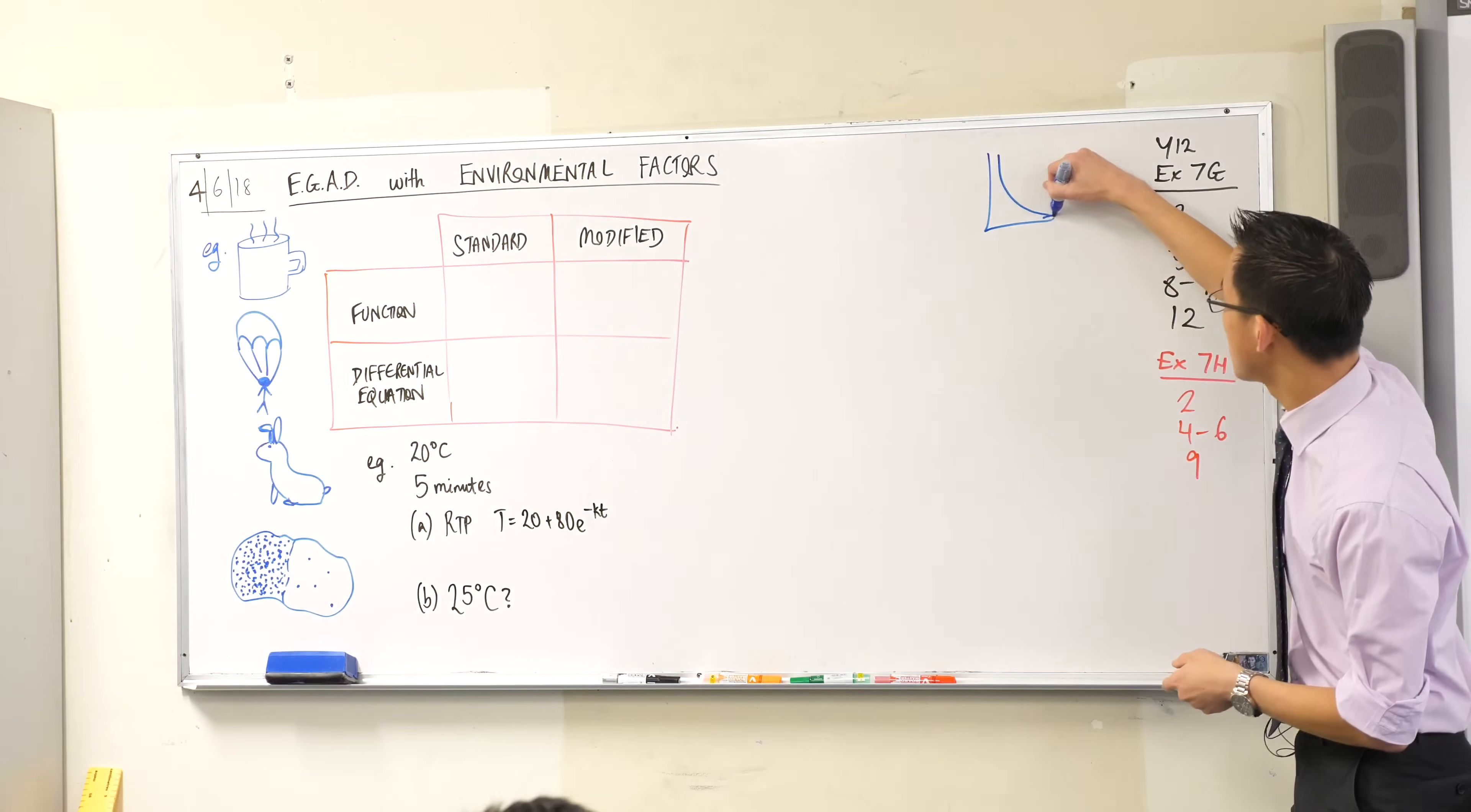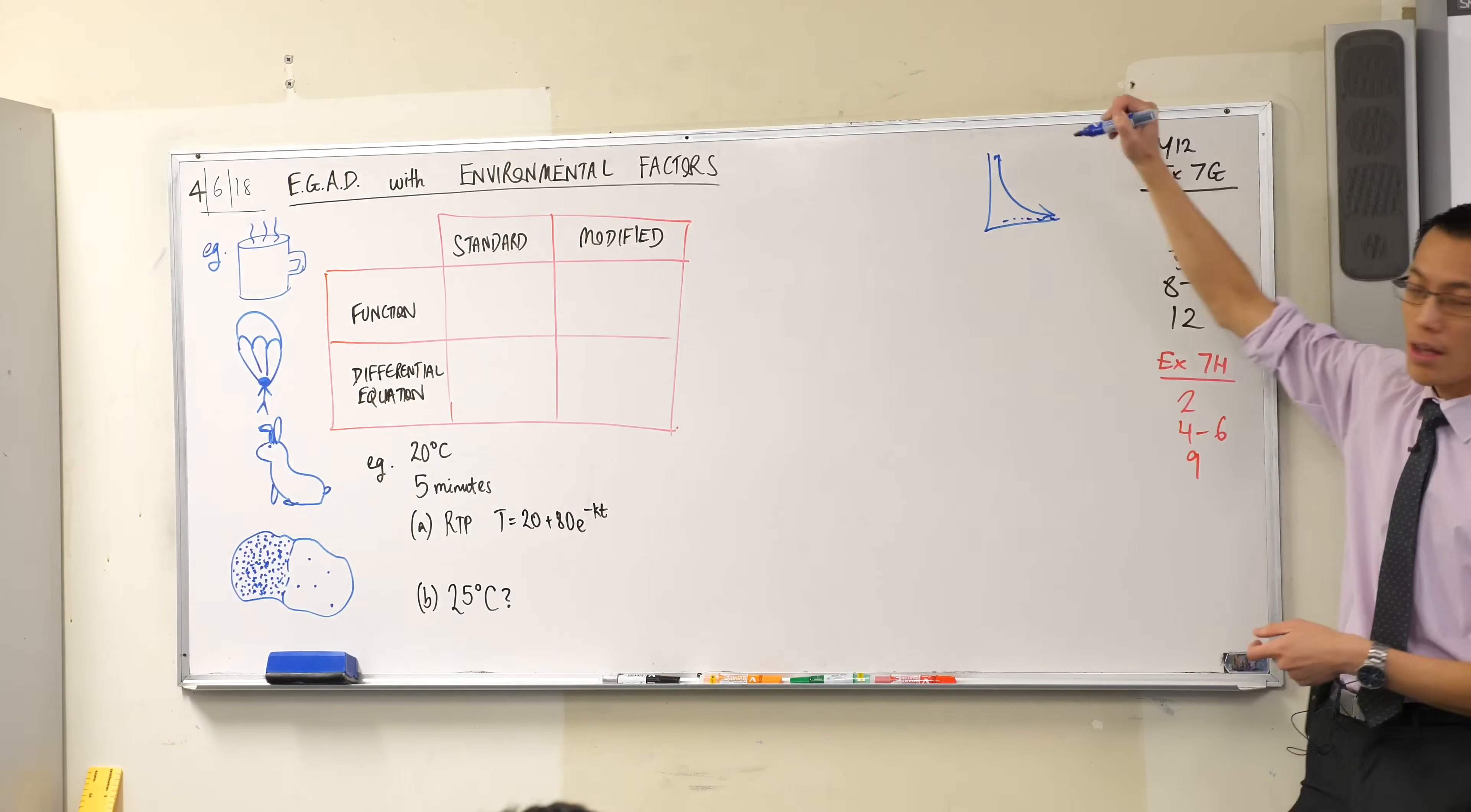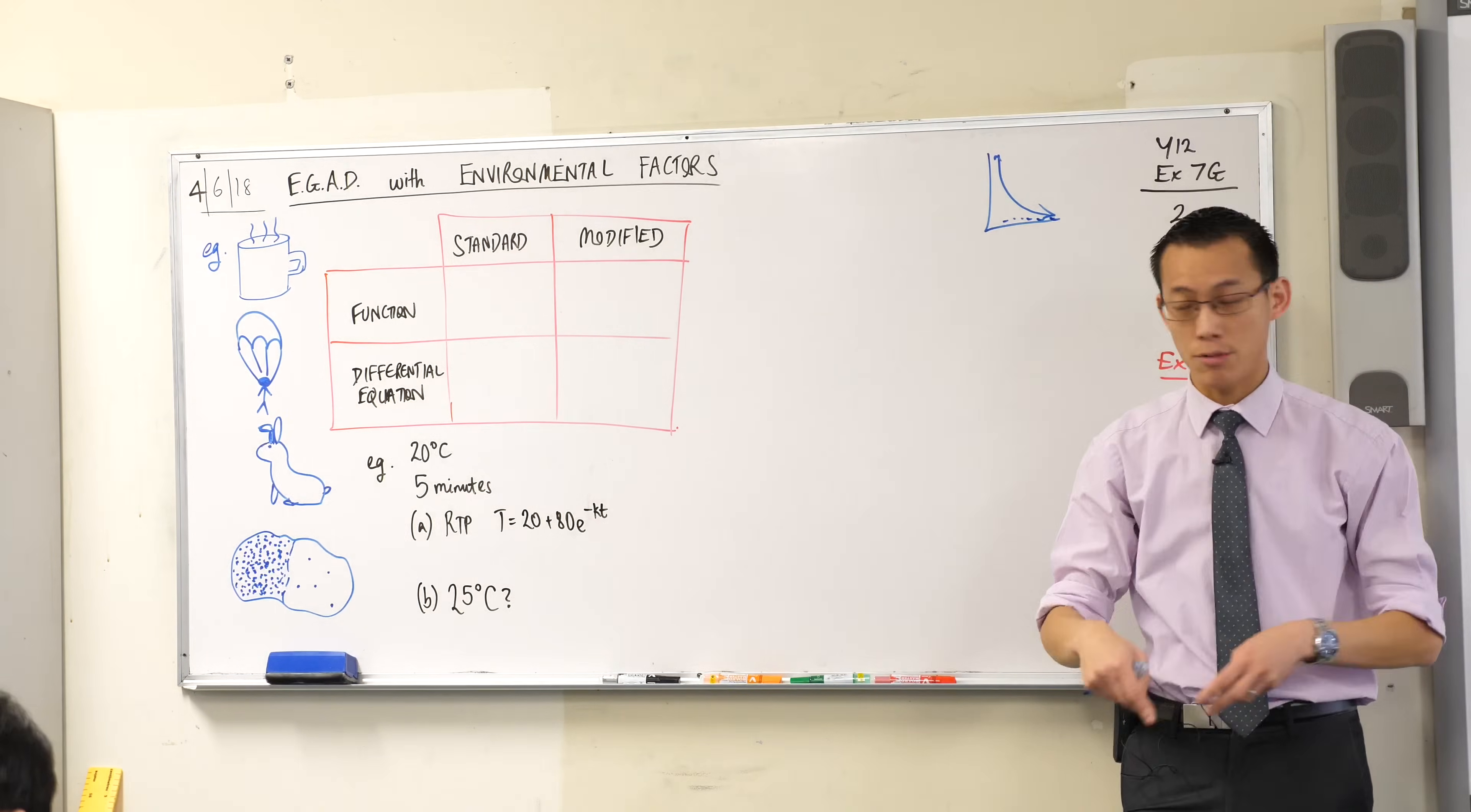When you think about the exponential decay graph, what it's looking like is something like this with our asymptote right on the axis, we go down to zero.